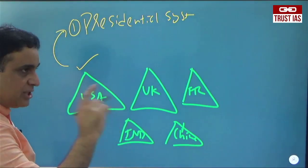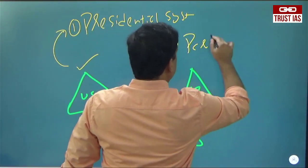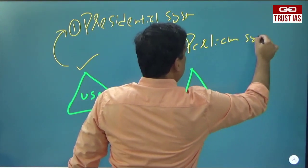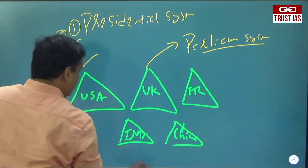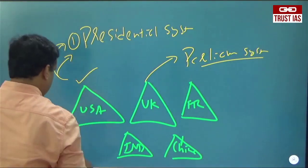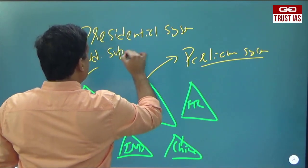America has the Presidential System. Britain has the Parliamentary System. America has Judicial Supremacy.